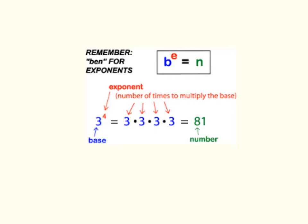We start with the base. In this expression, the base is 3. There is a small number, which we call an exponent, that looks like it is above the base, which tells us how many times we need to multiply the base. Our second step, then, is here — this is the exponential expression in what we call expanded form.